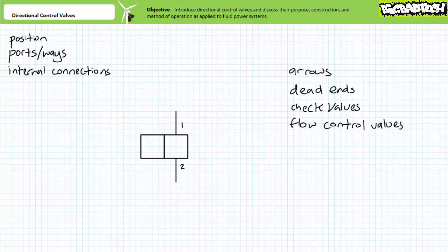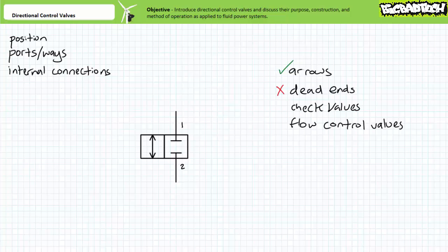Internal to the position boxes, directional control valves use a range of symbols to represent selectively connected or disconnected ports. Arrows from one port to another mean an open passageway is established between the two ports and fluid can flow. Unidirectional arrows mean flow is intended to be unidirectional, whereas bidirectional arrows mean flow can be bidirectional. A dead-end T means that port is not connected and no fluid can flow. Let's limit this introductory analysis to unidirectional and bidirectional arrows implying connection and dead-end T's implying no connection.